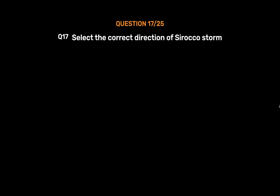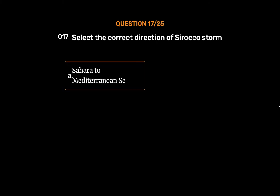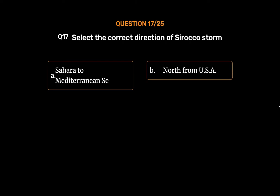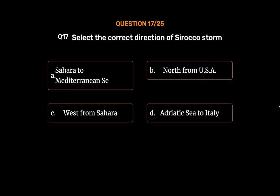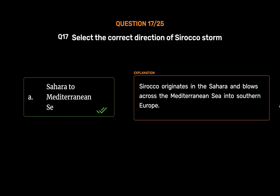Question No. 18: Select the correct direction of the Sirocco storm — Option A: Sahara to Mediterranean Sea, Option B: North from USA, Option C: West from Sahara, Option D: Adriatic Sea to Italy. The correct answer is Option A, Sahara to Mediterranean Sea. Sirocco originates in the Sahara and blows across the Mediterranean Sea into Southern Europe.